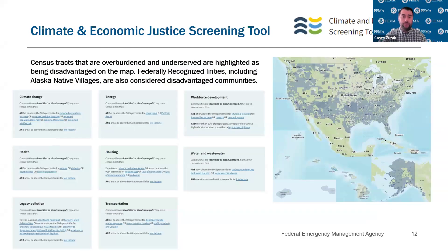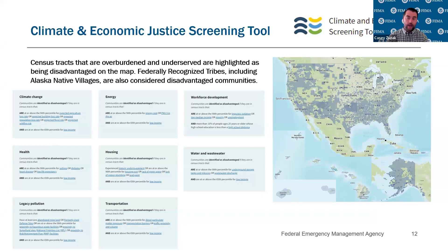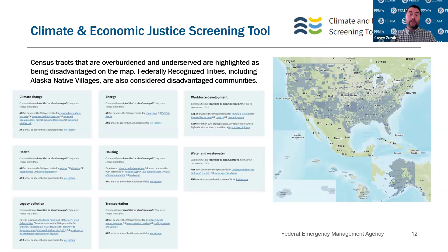The other tool we use to define the Community Disaster Resilience Zones is the Climate and Economic Justice Screening Tool, developed under the Biden administration to advance the Justice40 initiative. It provides an understanding of which census tracts may be overburdened and underserved. It looks at eight different themes measuring how overburdened or underserved communities may be. Importantly, all federally recognized tribes as well as Alaska Native villages are identified as disadvantaged communities as well.